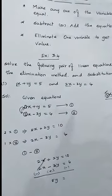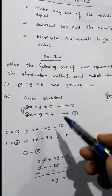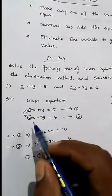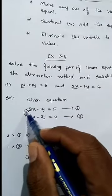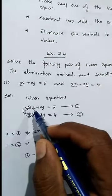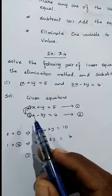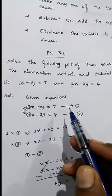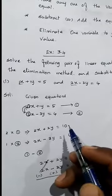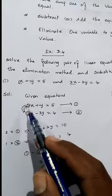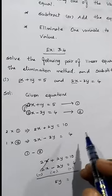We have to make one variable's coefficient equal — either the x variable coefficient or the y variable. Here's a small trick: take the coefficient of the x variable in equation 2 and multiply it with the whole of equation 1, then take the coefficient of x in equation 1 and multiply with equation 2. That way the coefficients will automatically become equal. So 2 times equation 1 gives 2x, 2y, and 10. Then 1 times equation 2 gives the same: 2x, 3, and 4.